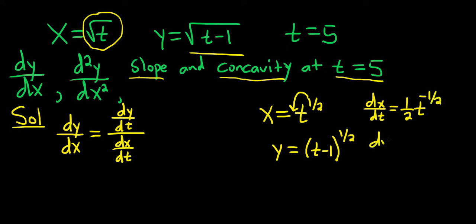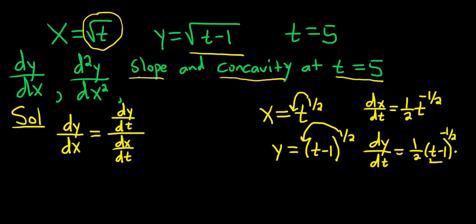And then dy/dt equals, again, put the one-half in the front: one-half times (t minus 1) to the negative one-half. Then times the derivative of the inside function by the chain rule. The derivative of t minus 1 is just 1, so we won't bother to write it. Let's go ahead and rewrite this one more time and then plug everything into our formula.